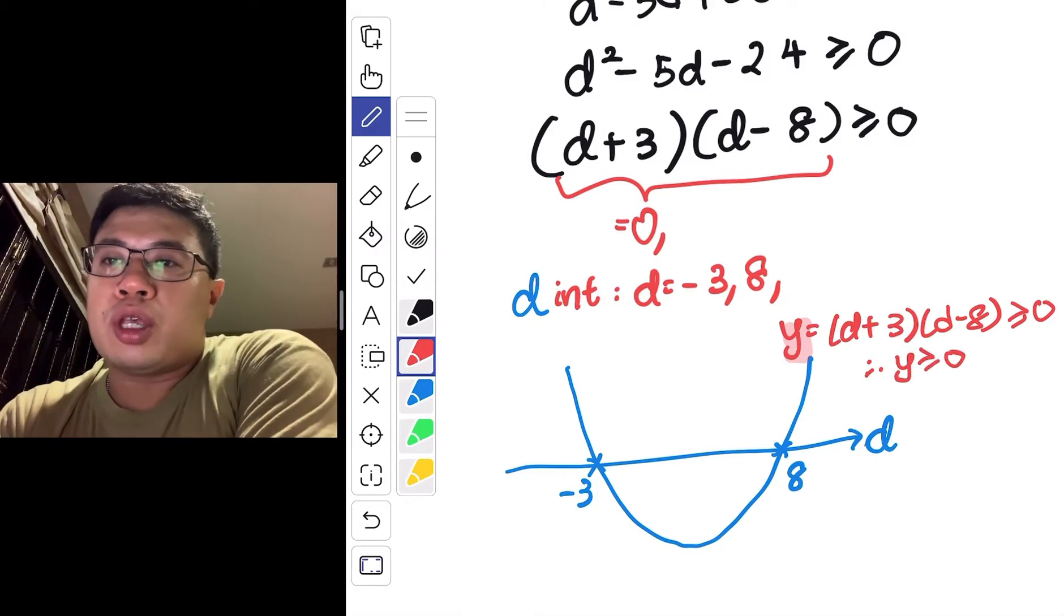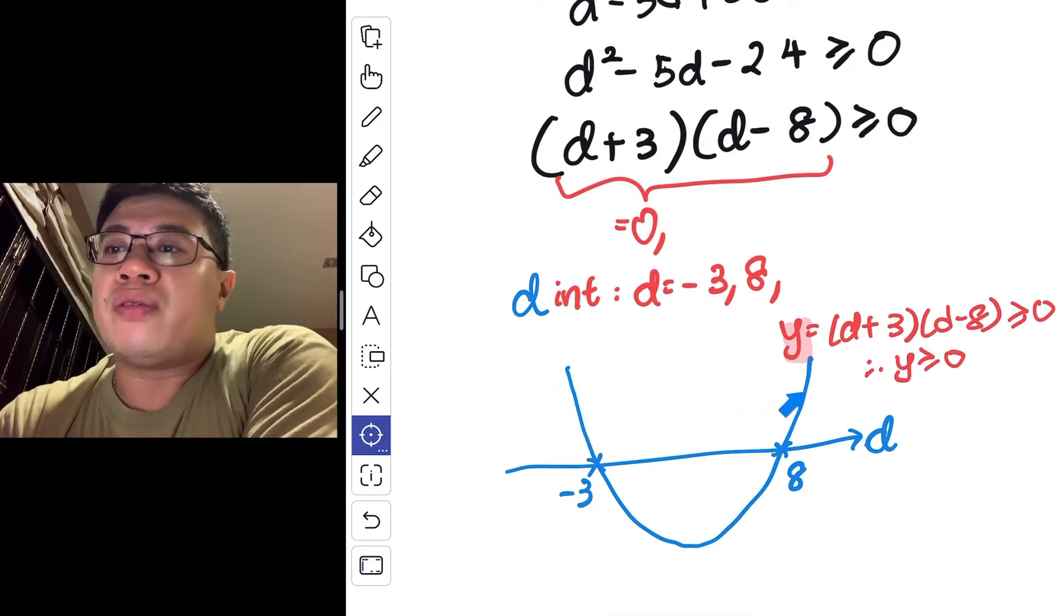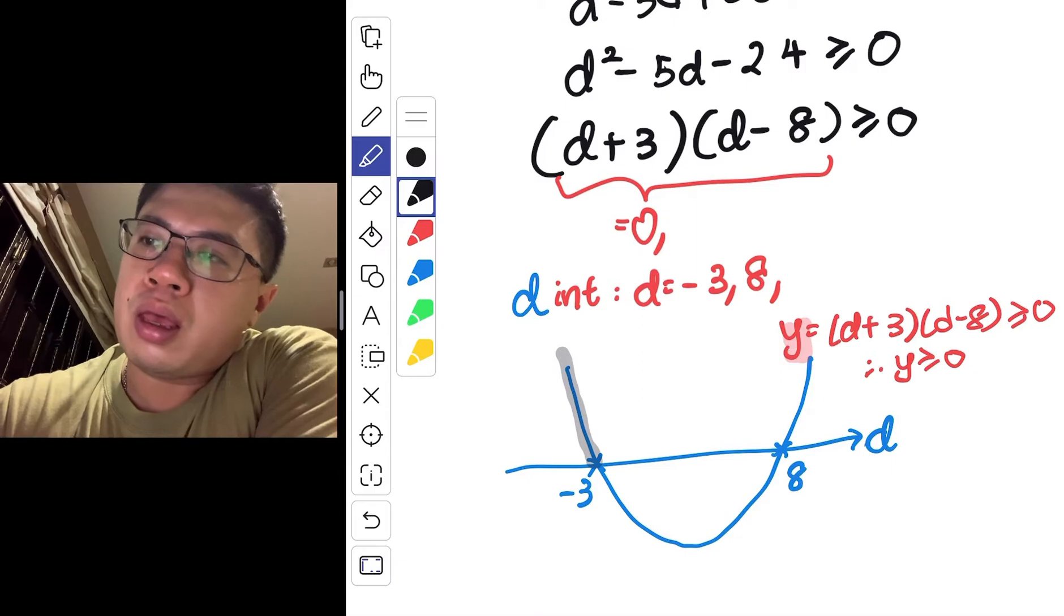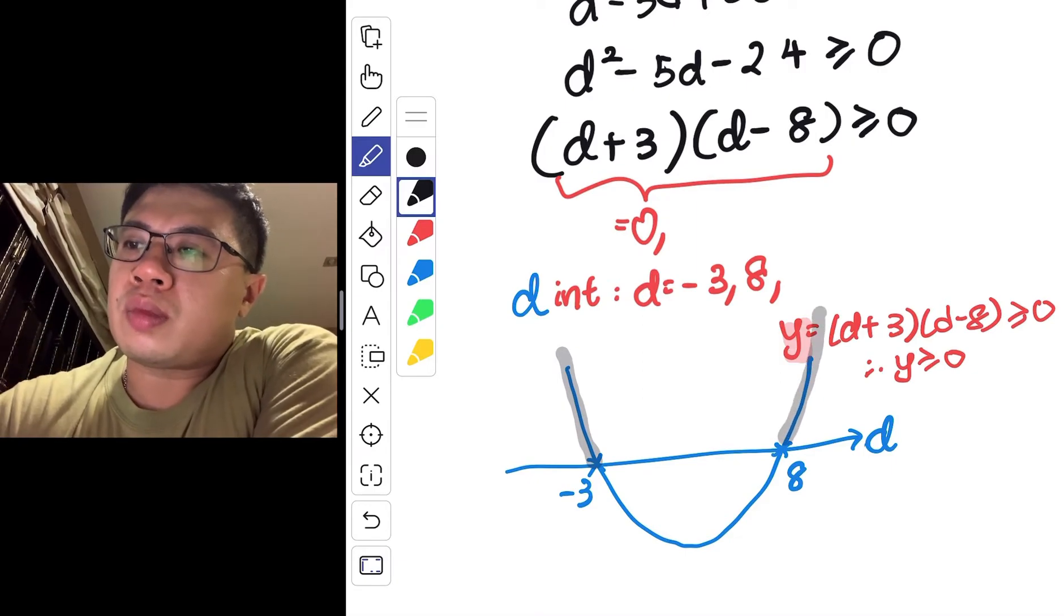y more than equals to 0 means we are looking at the area above the d-axis. Above the d-axis, over here.